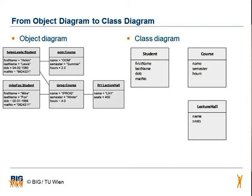In the next step we model the links. If there is only one link between two different objects in the object diagram, then there has to be also a corresponding link in the class diagram.